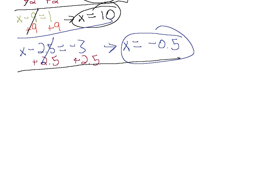Whatever we want to get the variable alone on one side — if we have subtraction on our variable side, we're going to use addition to cancel out the subtraction.